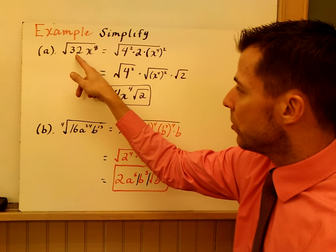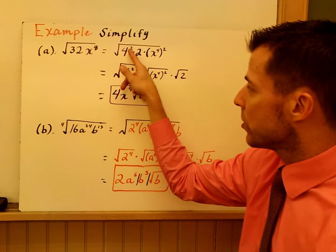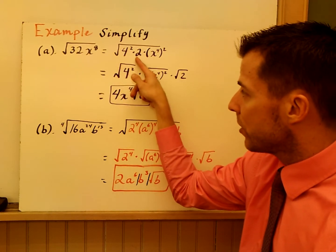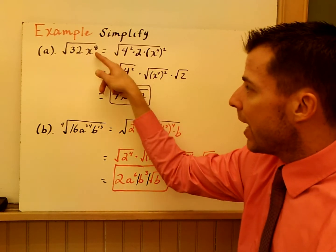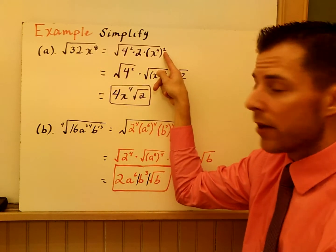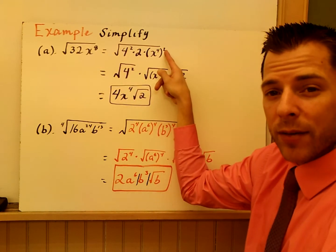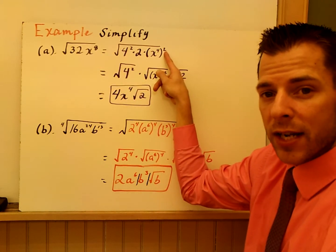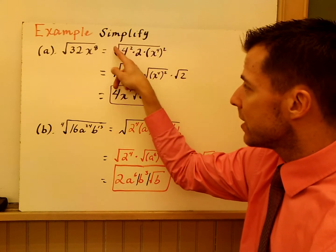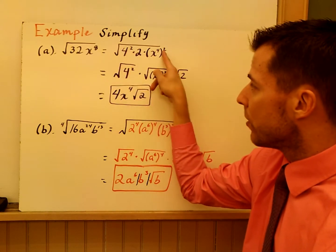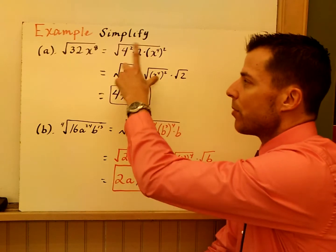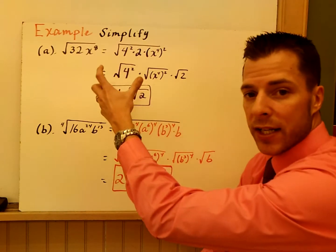So 32 is 4 squared times 2 — I rewrote 32 here. x to the eighth is x to the fourth, squared. Notice I put the 2 on the outside, not the 4. So when these indexes match the powers, they can come out. I just broke it apart again — this is that first part of the essential knowledge.